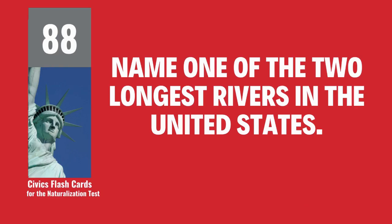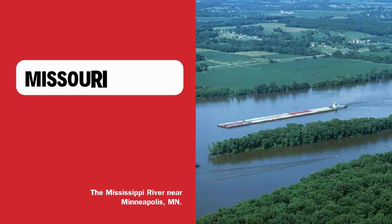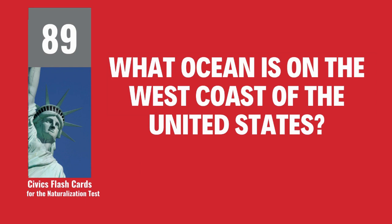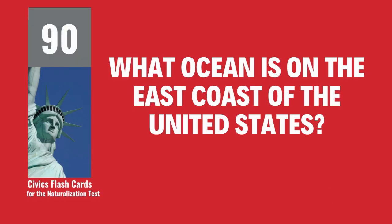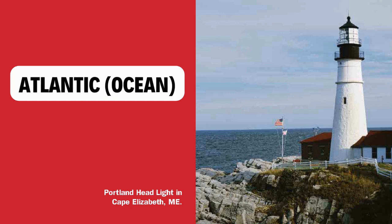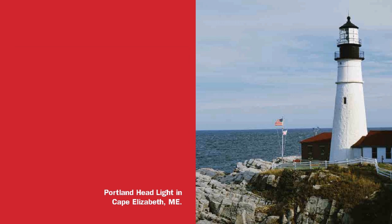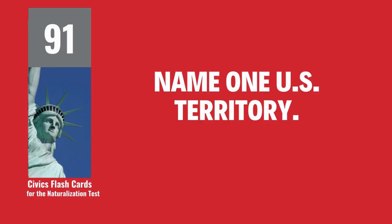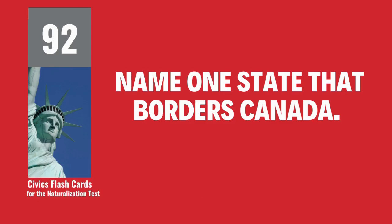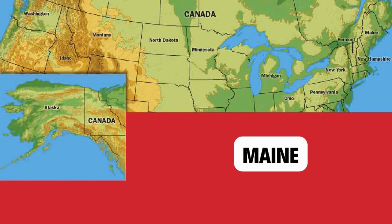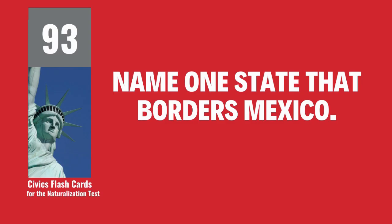Name one of the two longest rivers in the United States. Missouri River. What ocean is on the west coast of the United States? Pacific Ocean. What ocean is on the east coast of the United States? Atlantic Ocean. Name one U.S. territory. Puerto Rico. Name one state that borders Canada. Maine. Name one state that borders Mexico. California.